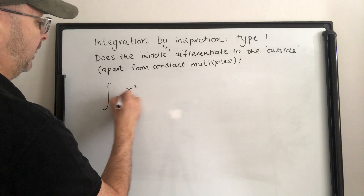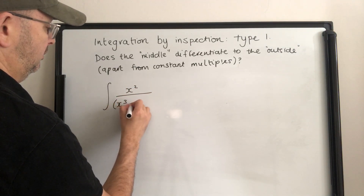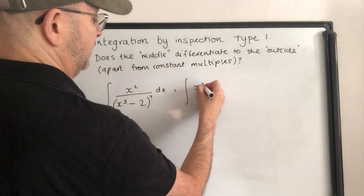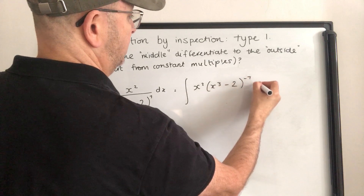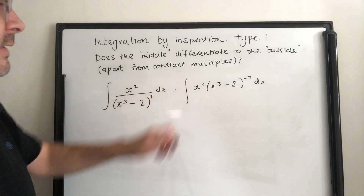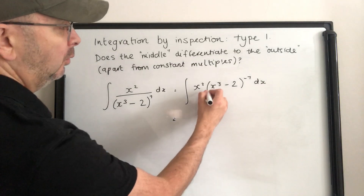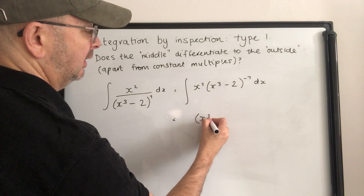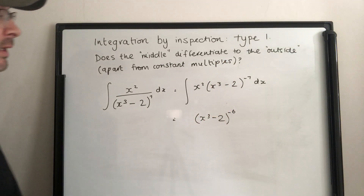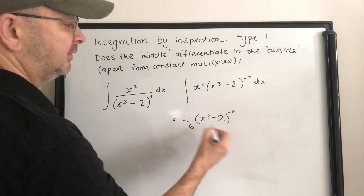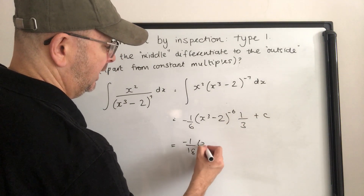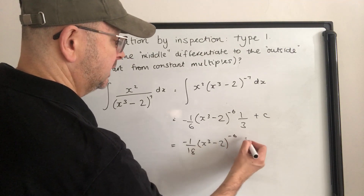Now let's do x squared over x cubed minus 2 to the power of 7. Does the middle differentiate to the outside? x cubed minus 2 differentiates to 3x squared — we've got the x squared, so that's fine; we ignore it now. What sort of thing would differentiate to that? x cubed minus 2 to the power of minus 6. The minus 6 comes down the front; we don't want it. Then we get 3x squared from the chain rule; we only want x squared. Final answer: minus one eighteenth times x cubed minus 2 to the power of minus 6, plus c.